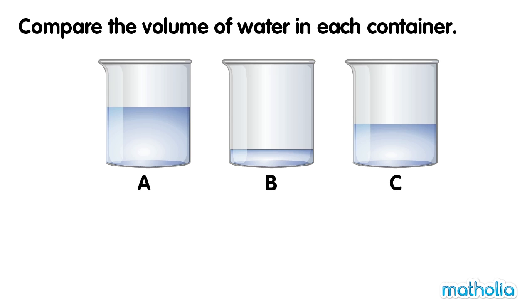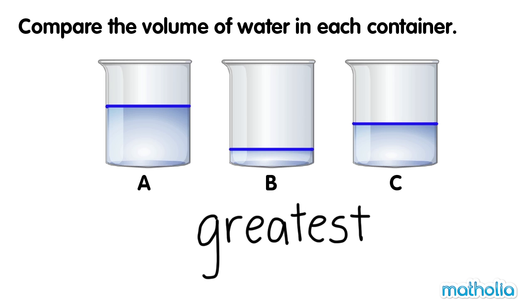Compare the volume of water in each container. All of the containers are the same size. The level of water in each container is different. The level of water in container A is higher than the level of water in container B and container C. The volume of water in container A is the greatest.